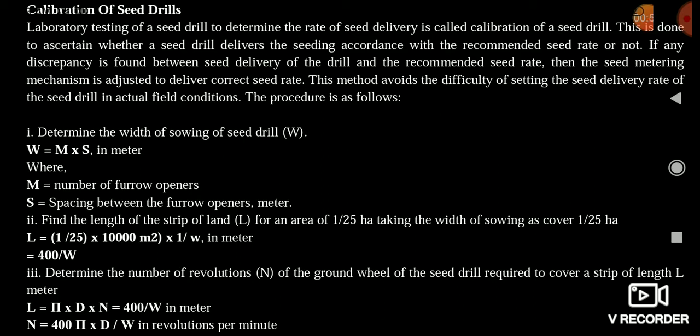The width formula is W = M × S, where M is the number of furrow openers and S is the spacing, so the width equals the total number of furrow openers multiplied by the spacing between two successive furrow openers. Since area equals length × width, the length L = area / width. We assume a reference area of 1/25 hectare of land. Converting to square meters: (1/25) × 10,000 / W, which gives us length L = 400 / W.